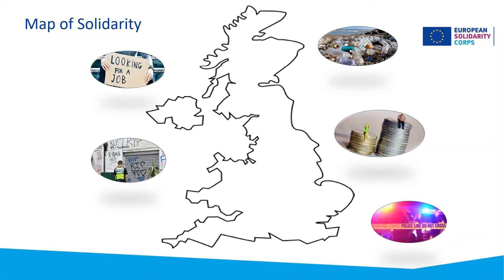Gather the group together and ask them each to present an issue that affects their local town or region. If wider societal issues are discussed, you can place them elsewhere on the map. By the end of the session, the group should have a number of different topics they feel passionate about and that their project might wish to address. From here, encourage further discussions to focus in on just one specific community problem. This will act as the launch pad from which they can start to flesh out their very own project plan. To download the Map of Solidarity, head over to the UK European Solidarity Corps website.